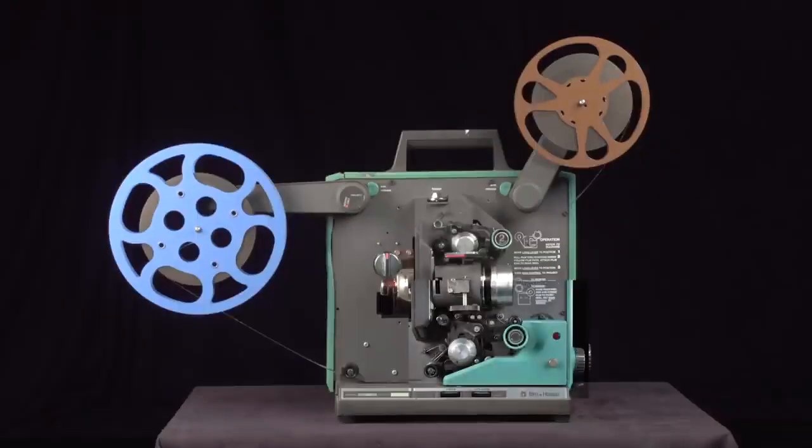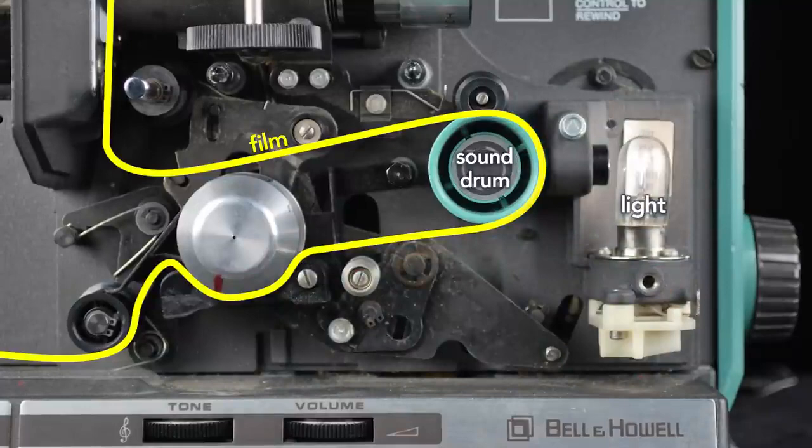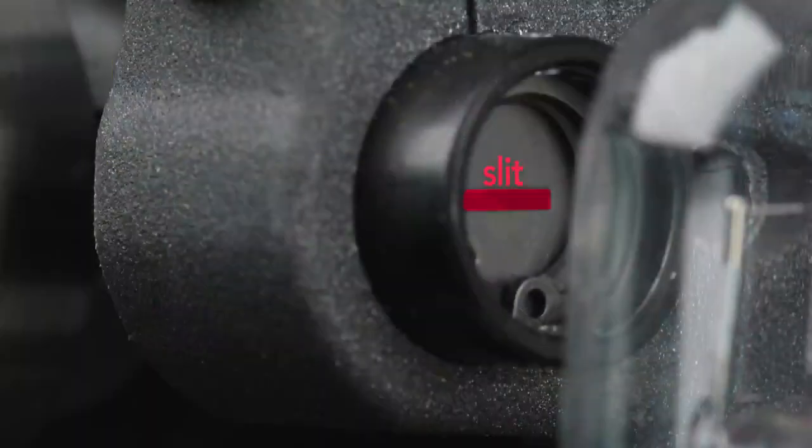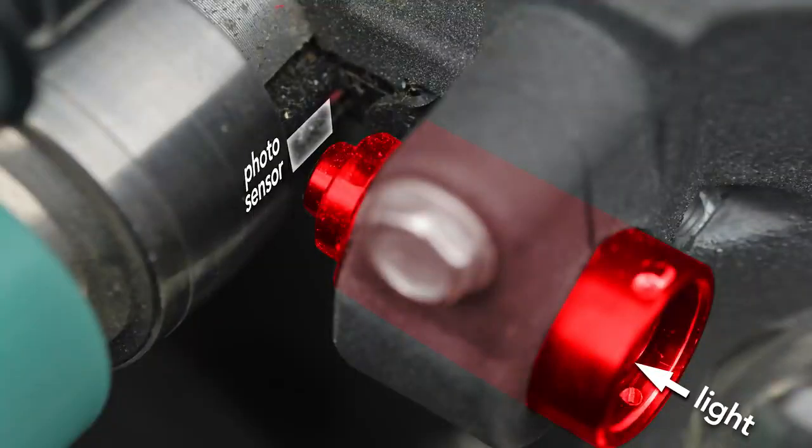Sound in movies is recorded optically on the edge of the film. After the film runs past the lamp, it runs across the sound drum. To read this optical soundtrack, light shines through a tube with a slit. This concentrates the light on a small section of the film's soundtrack. A photosensor on the other side of the film measures the amount of light passing through the film at a given time.